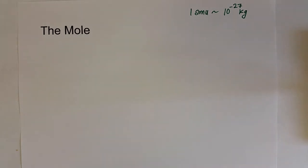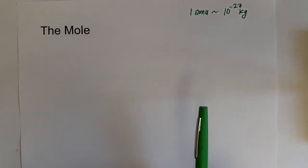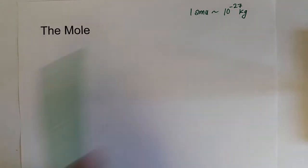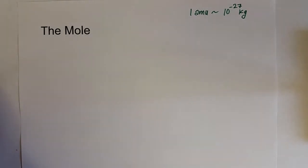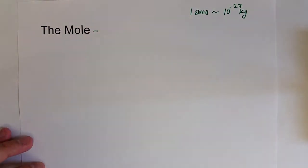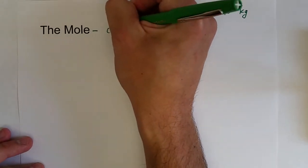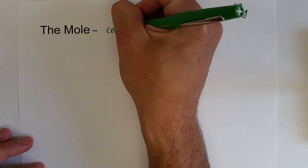That was a good starting point. But in the lab, we want to use something that's a little bit more convenient to measure the mass of and use in terms of calculations. That's where chemists started to use a collection term called the mole.